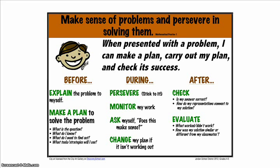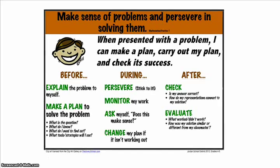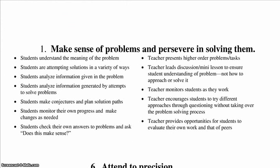They consider analogous problems and try special cases or simpler forms of the original problem in order to gain insight into its solution. They monitor and evaluate their progress and change course if necessary. Older students might, depending on the context of the problem, transform algebraic expressions or change the viewing window on a graphing calculator to get the information they need. Mathematically proficient students can explain correspondences between equations, verbal descriptions, tables, and graphs, or draw diagrams of important features and relationships. They can also graph data and search for regularity or trends. Younger students might rely on using concrete objects or pictures to help conceptualize and solve a problem.